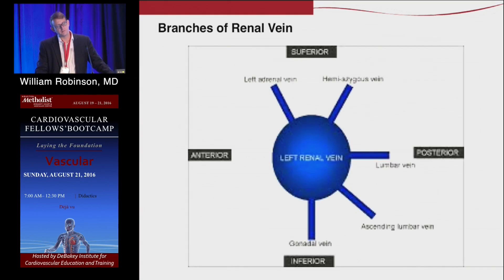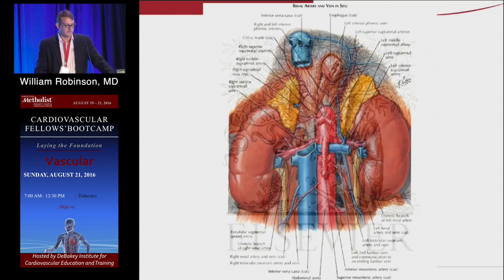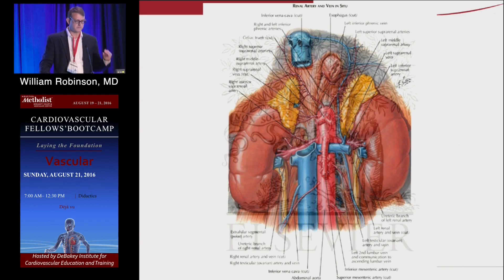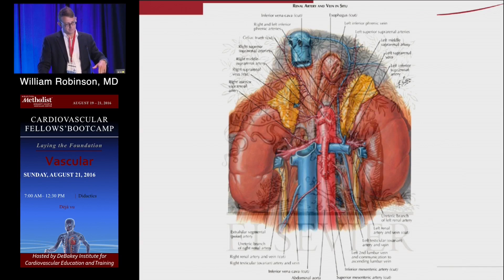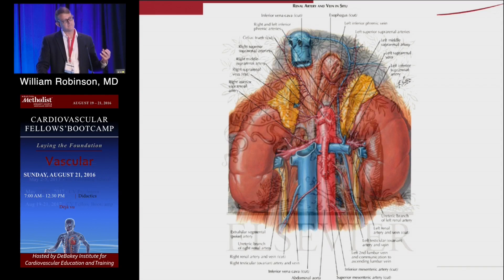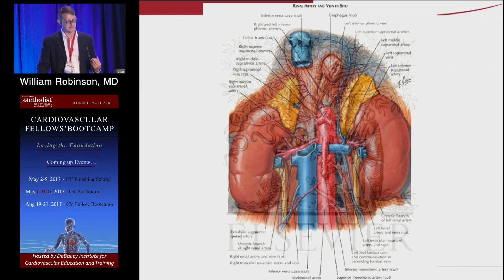The venous drainage of the kidney is probably the most important anatomic aspect. The left renal vein comes over the aorta and under the SMA. There are three main branches to the renal vein: a gonadal vein that comes inferior, an adrenal vein that goes superior, and posteriorly a lumborenal or lumbar vein that drains into the kidney.